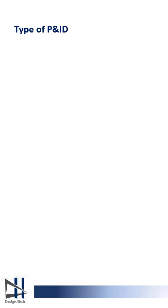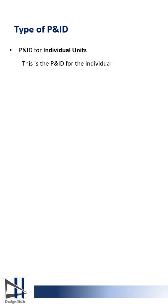The first type is P&ID for individual units. This kind of P&ID is for the individual units composing the on-site utility and offshore facilities.